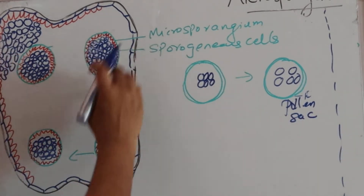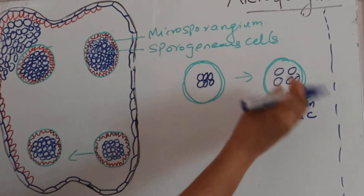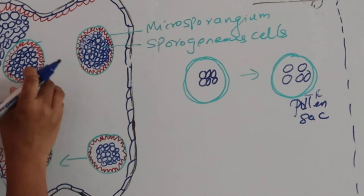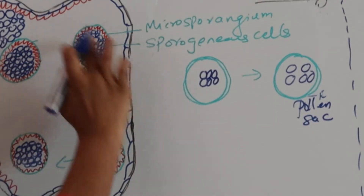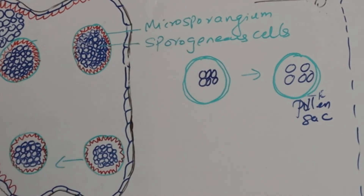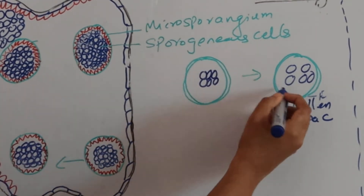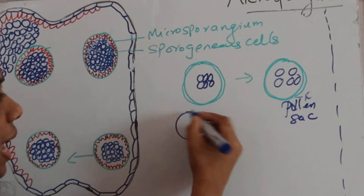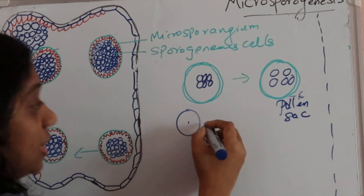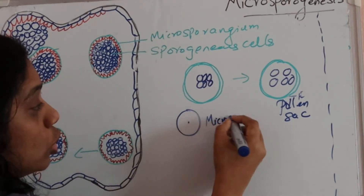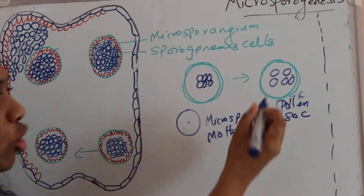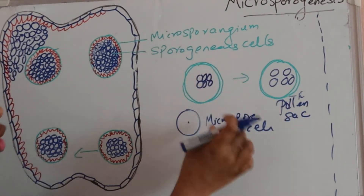At the earlier stage it was the microsporangium, and at the next stage it becomes loosely arranged — now we can call it as the pollen sac. So all the sporogenous cells are tightly arranged at first, then at the next stage all the sporogenous cells become loosely arranged. This individual cell is called the microspore mother cell.